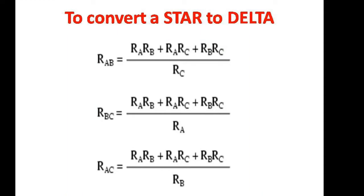To convert a star to delta: if we take three resistors as Ra, Rb, and Rc in star connection, the delta network has Rab, Rbc, and Rca. We can obtain Rab = (Ra·Rb + Ra·Rc + Rb·Rc) / Rc. In a similar manner we can get Rbc and Rca.